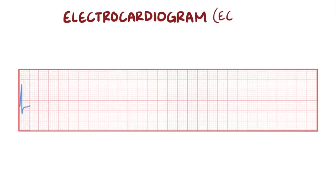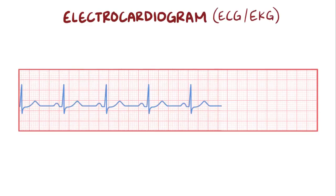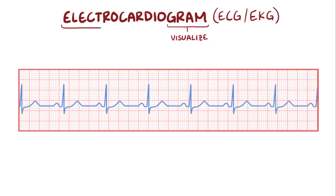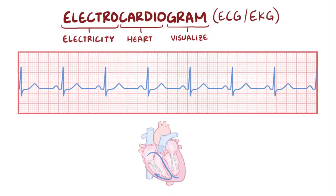An electrocardiogram, or ECG, or the Dutch or German version of the word EKG, is a tool used to visualize the electricity that flows through the heart. An ECG tracing specifically shows how the depolarization wave moves during each heartbeat, which is a wave of positive charge.